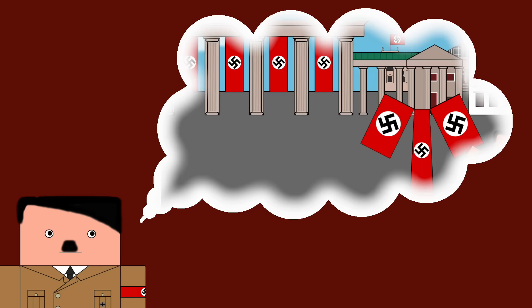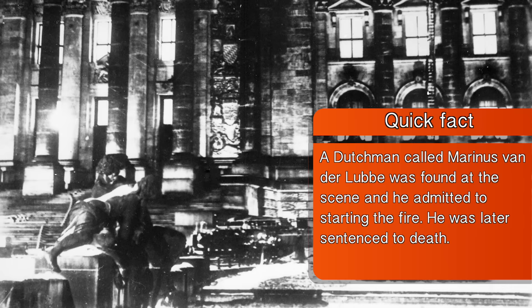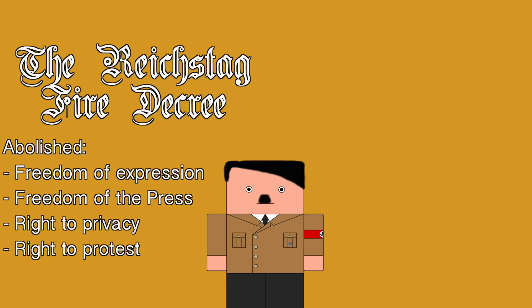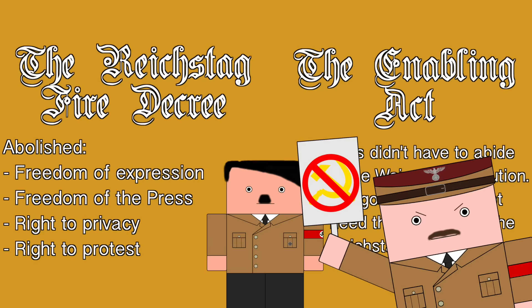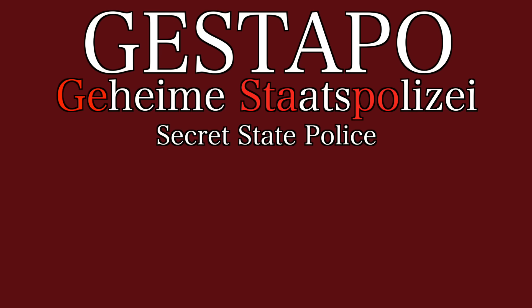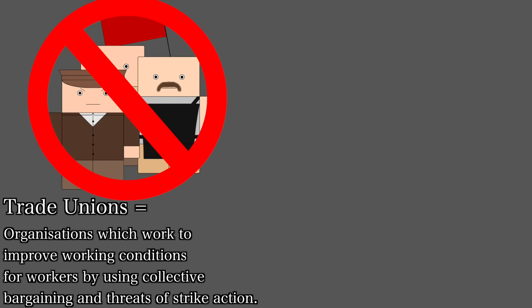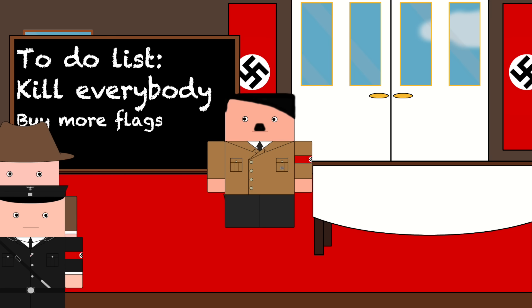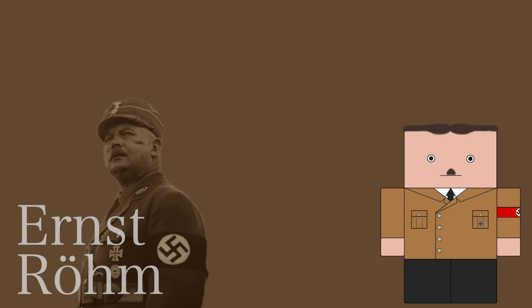Hitler immediately began working to overthrow the government. A fire started in the Reichstag by a young Dutch communist was used by Hitler to paint all communists as the enemies of Germany. Hindenburg, under pressure from Hitler, issued the Reichstag Fire Decree, and the Reichstag passed the Enabling Act, which suspended many civil liberties and made Hitler the de facto dictator of Germany. These were passed mainly because the opposing communist parties were outlawed and the vote was being held in a building filled with armed members of the SA. Over the next few months, Hitler established the secret police, the Gestapo, to shore up his position. He outlawed trade unions as breeding grounds for communists, and in July abolished all other political parties. In 1934, Hitler ordered the SS and the Gestapo to eliminate his enemies, which included the head of the SA, Ernst Röhm, in an event known as the Night of the Long Knives.